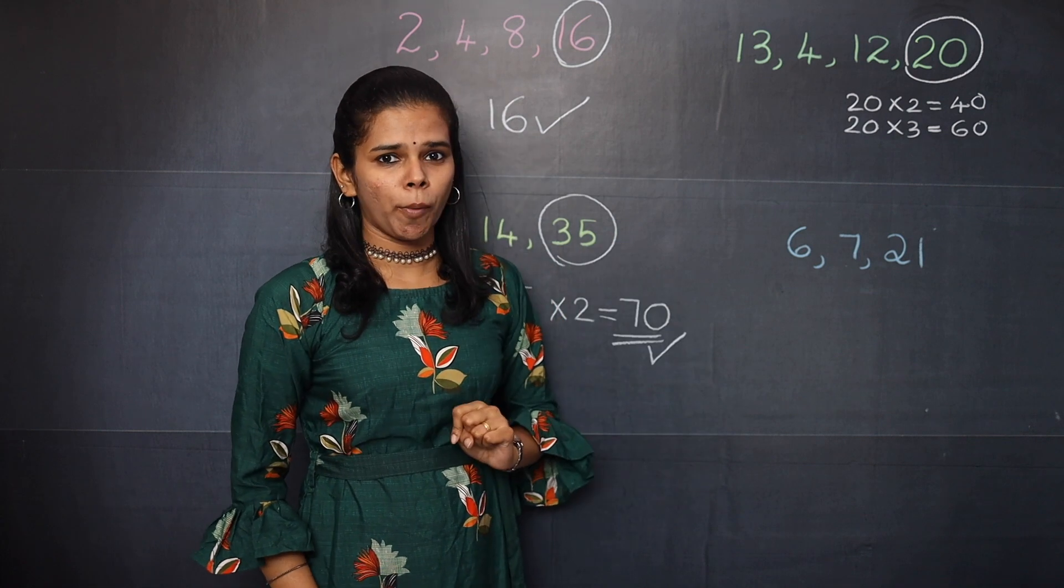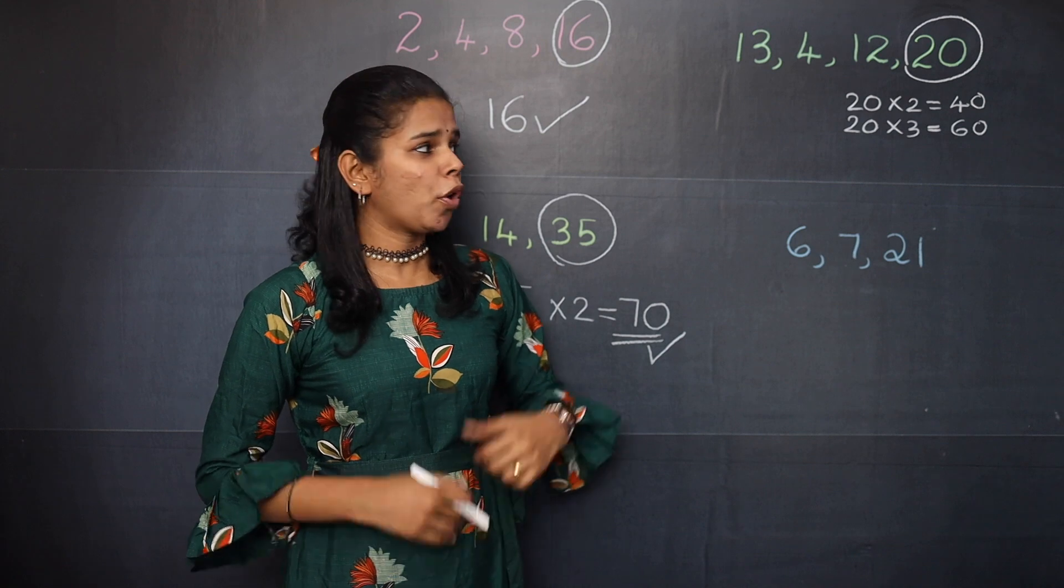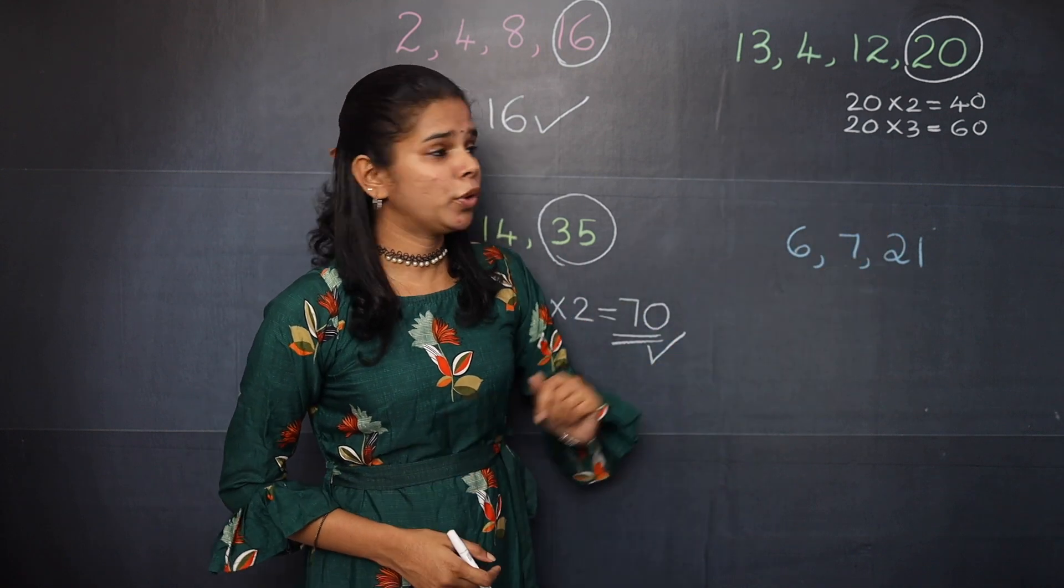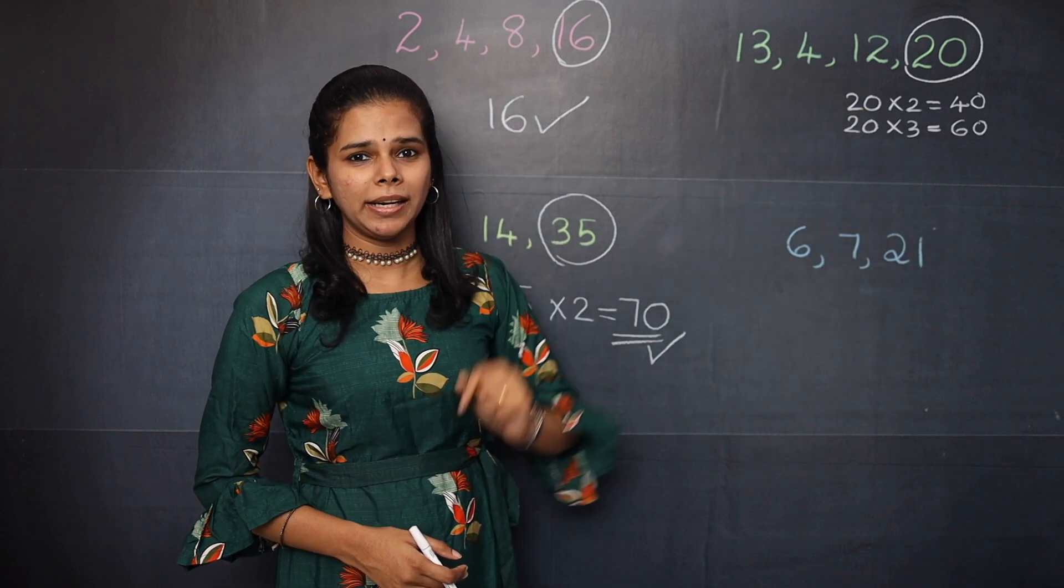Now 13 is the only problem. But you know that 13 is a prime number. So whatever you do, even when you multiply 20 by 4 or 5,